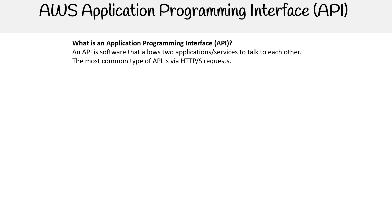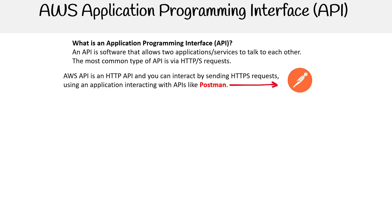The most common protocol that you can use is HTTP, and AWS uses HTTP for their protocol. You can send HTTP requests using a program such as Postman, or you can use curl or wget. The idea is that you will get back a response of information about your cloud resources.